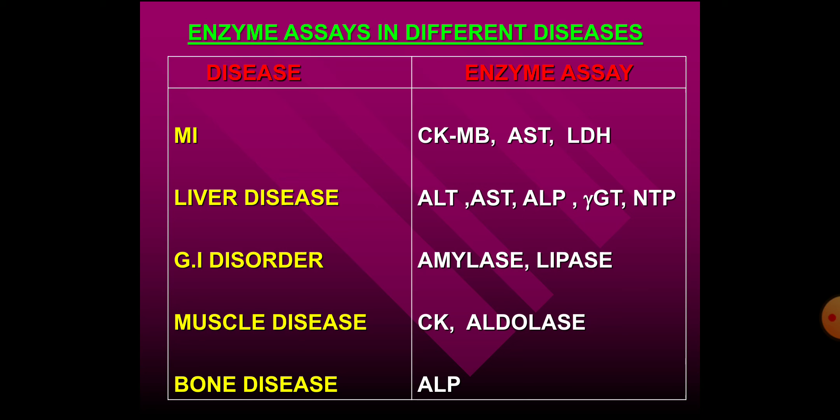Here is a summary of diseases and their associated enzymes: Myocardial infarction — CKMB, AST, and LDH. Liver disease — ALT, AST, ALP, gamma-GT, and nucleotidase. Gastrointestinal disorder — amylase and lipase. Muscle disease — creatine kinase and aldolase. Bone disease — ALP.